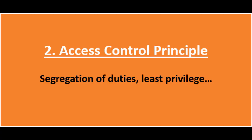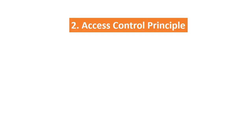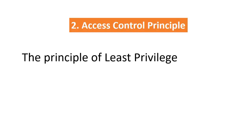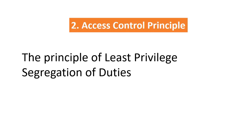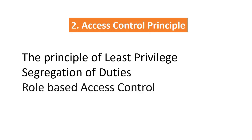Point number two, access control principles. Ensure that the organization has implemented the principle of least privilege. An essential internal control in any organization, designed to prevent conflict of interest or fraud and error, is segregation of duties. Ensure that a maker-and-checker or maker-and-approver workflow is implemented in the applications. Additionally, role-based access control should be implemented, ensuring end users are given roles specific to their functions. For example, a backup operator does not need domain administration rights.